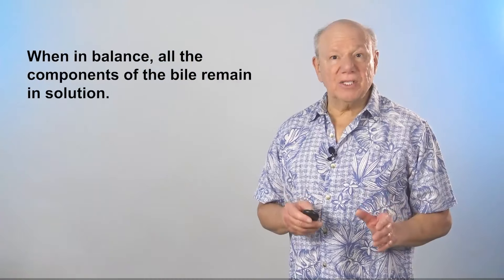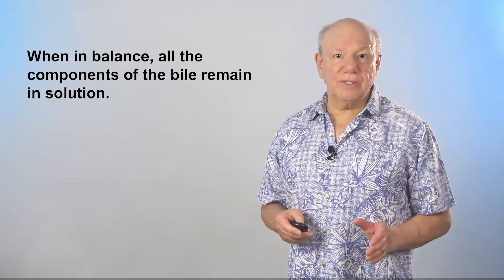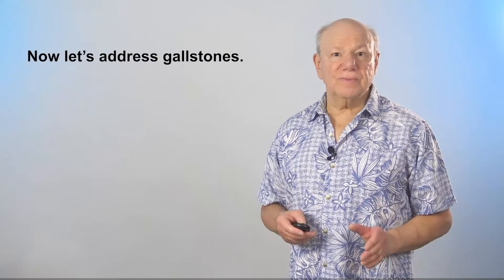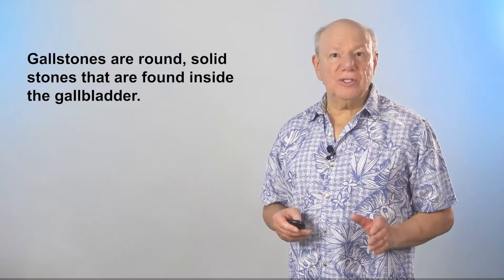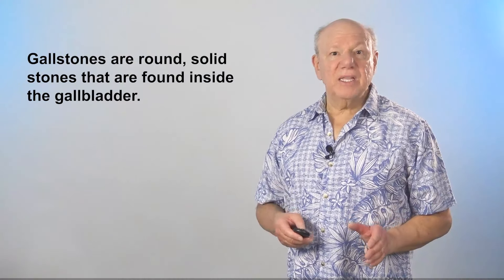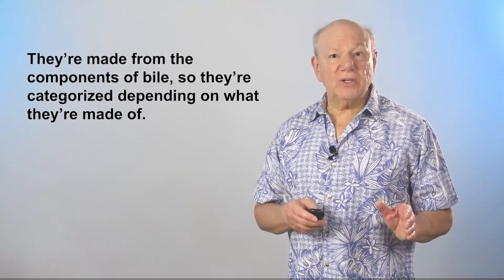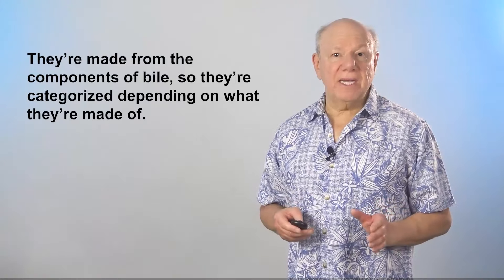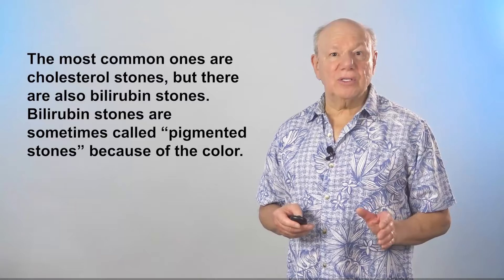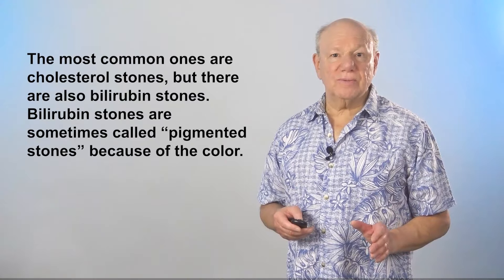When in balance, all of the components of bile remain in solution. Now let's address gallstones. Gallstones are round, solid stones found inside the gallbladder. They're made from the components of bile, so they're categorized depending upon what they're made of. The most common ones are cholesterol stones, but there are also bilirubin stones.